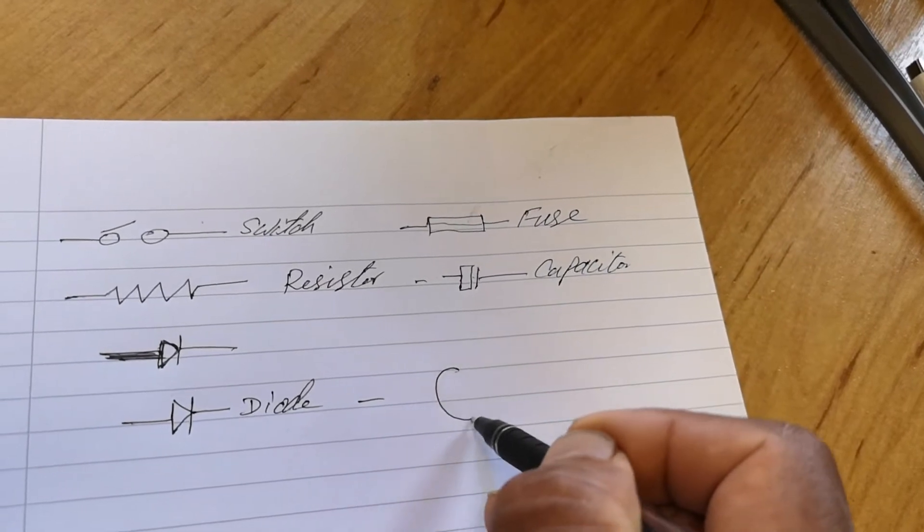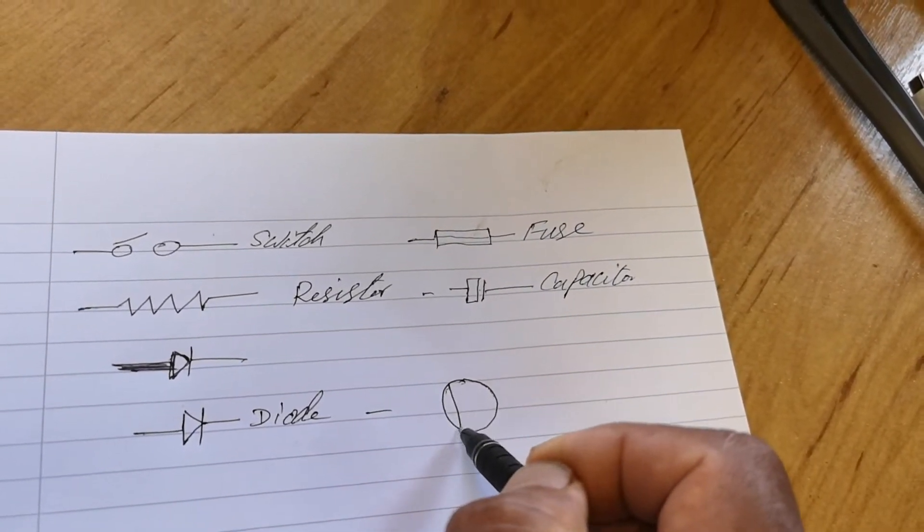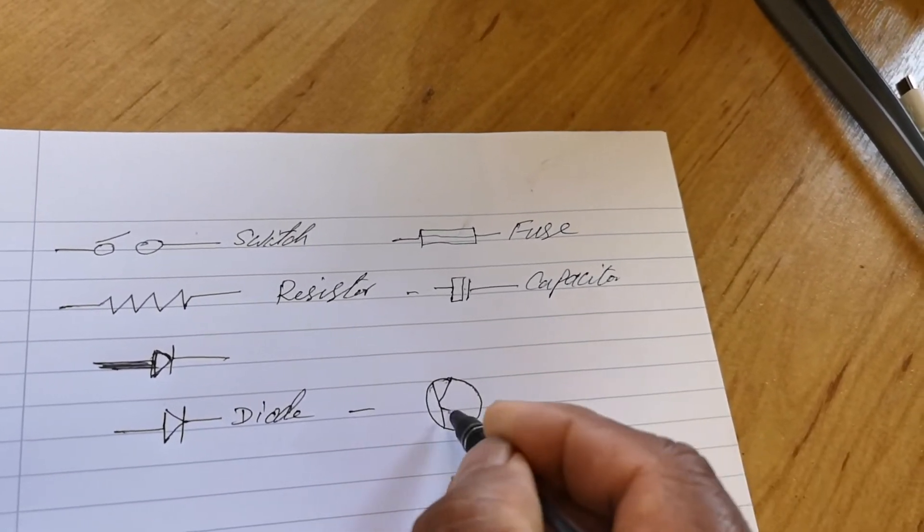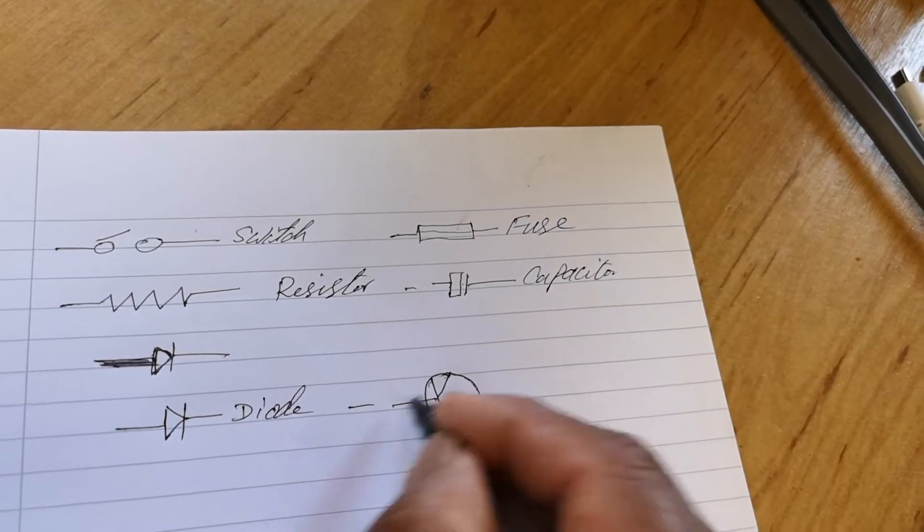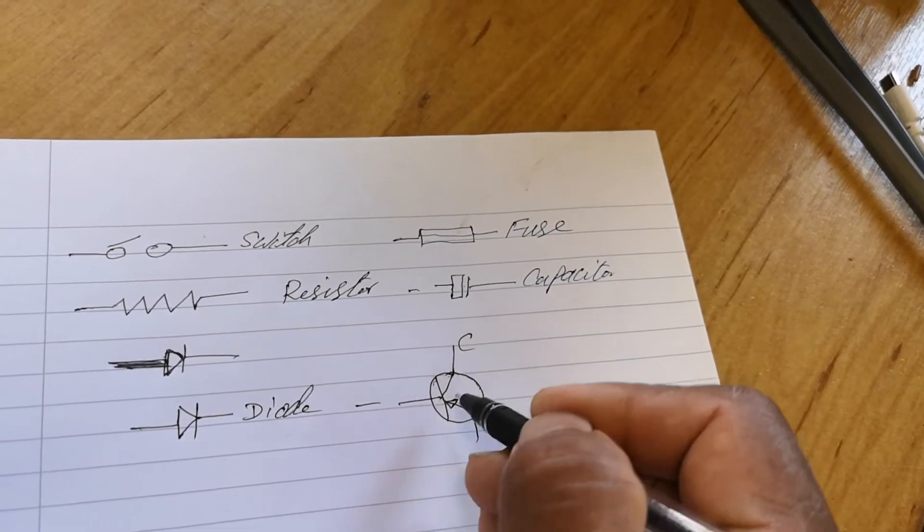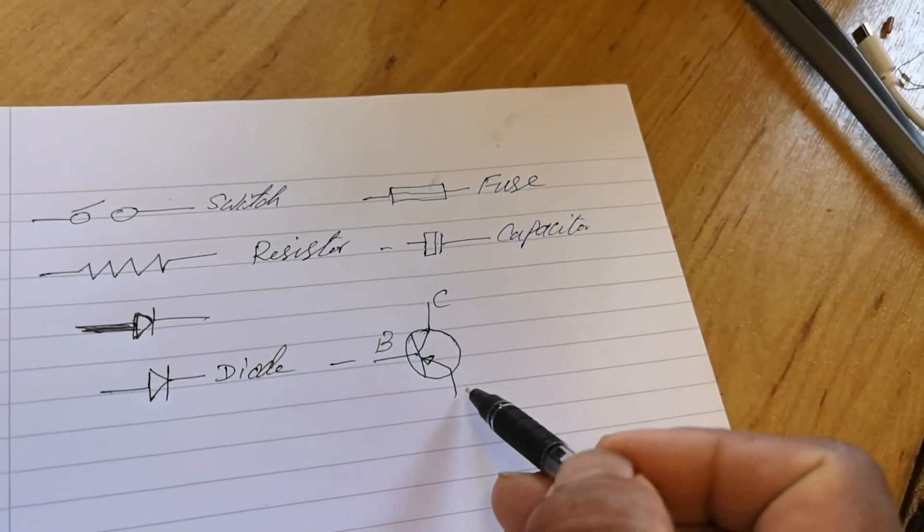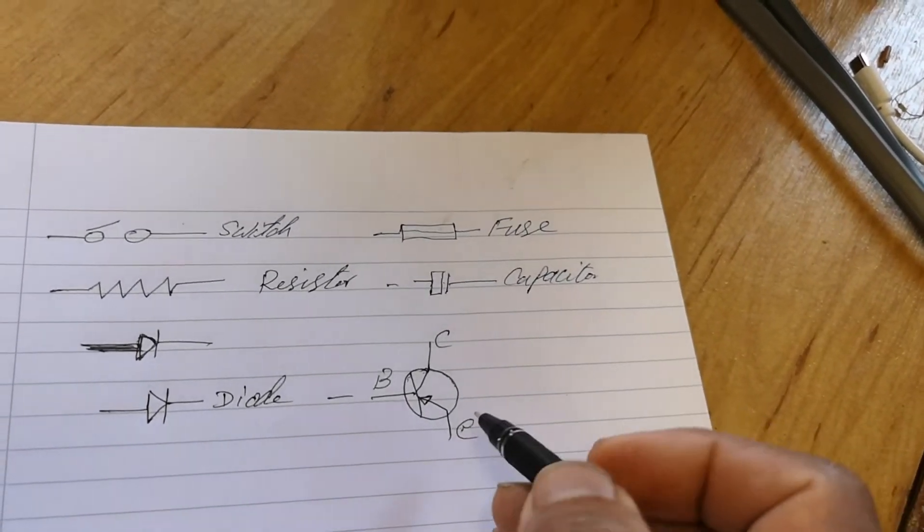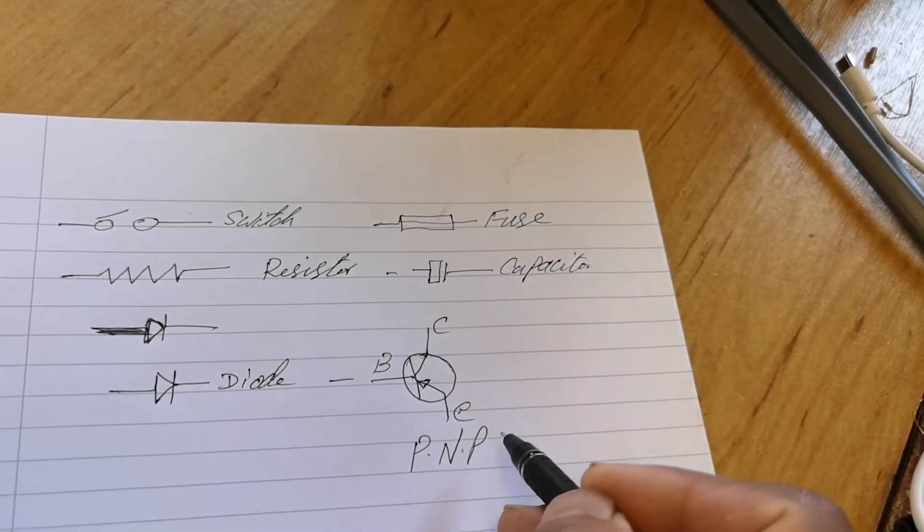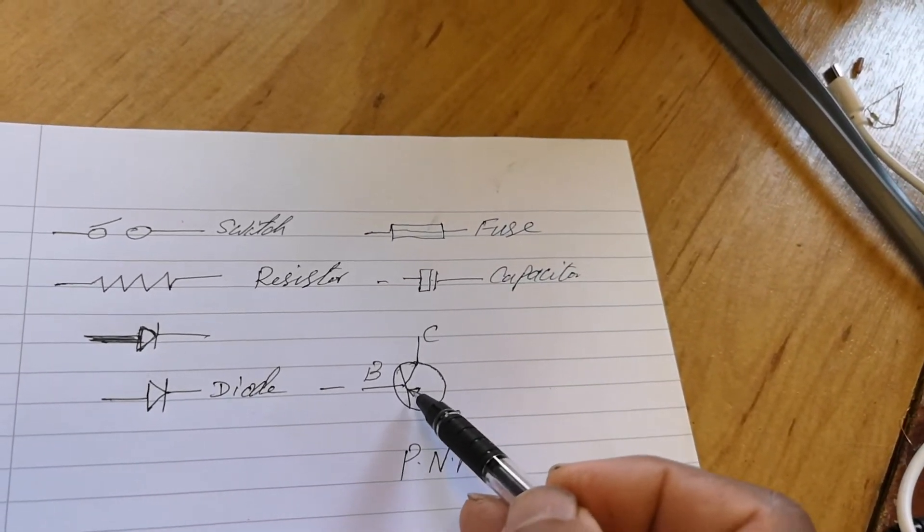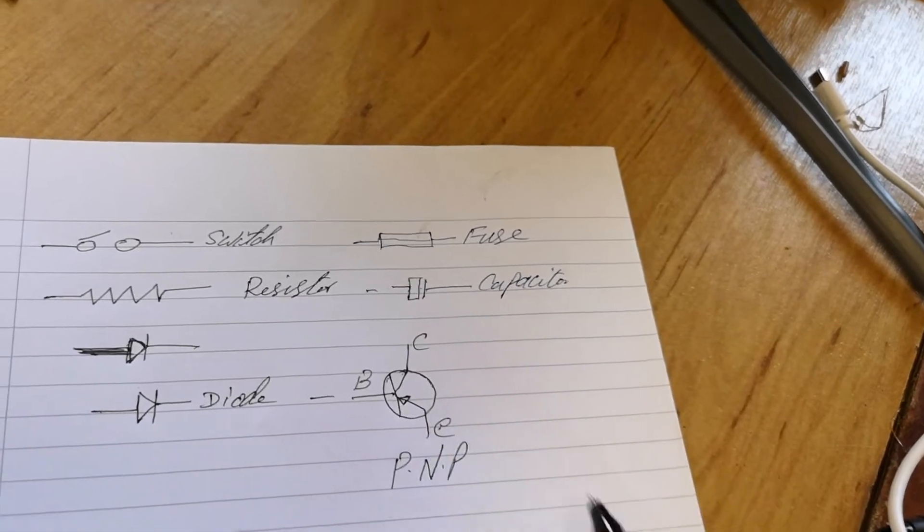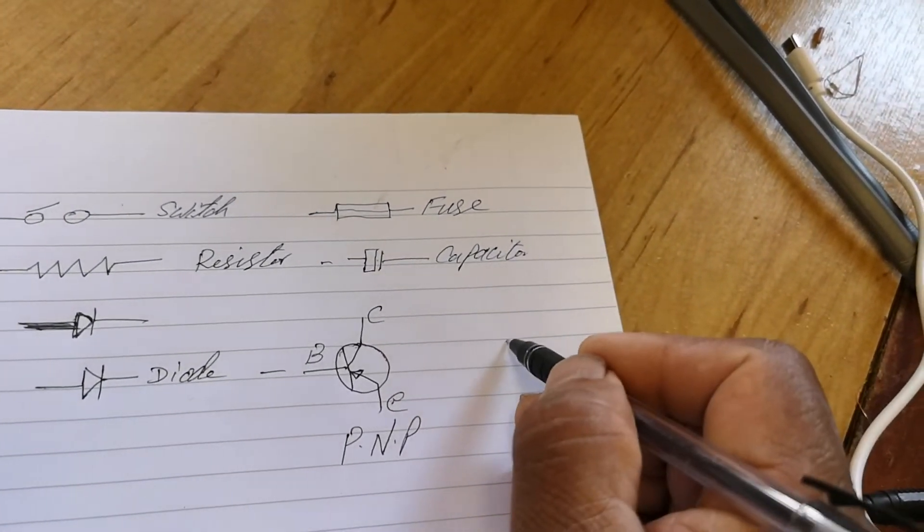Transistor. Collector, so this is the collector, base, and emitter. This is a PNP. The PNP, the arrows actually facing inward of the transistor is PNP. Okay, the positive going in.